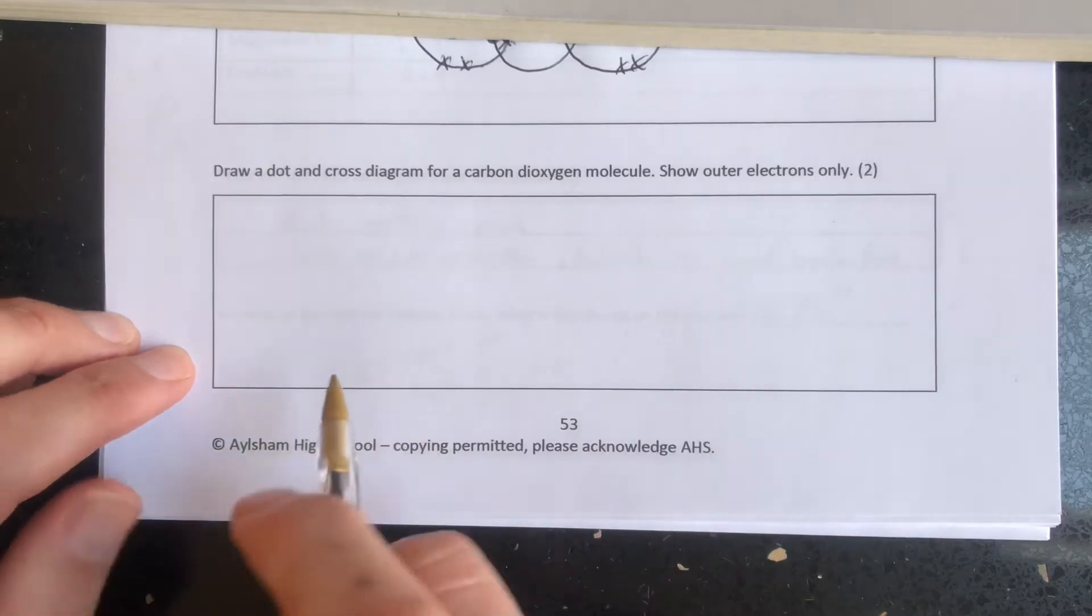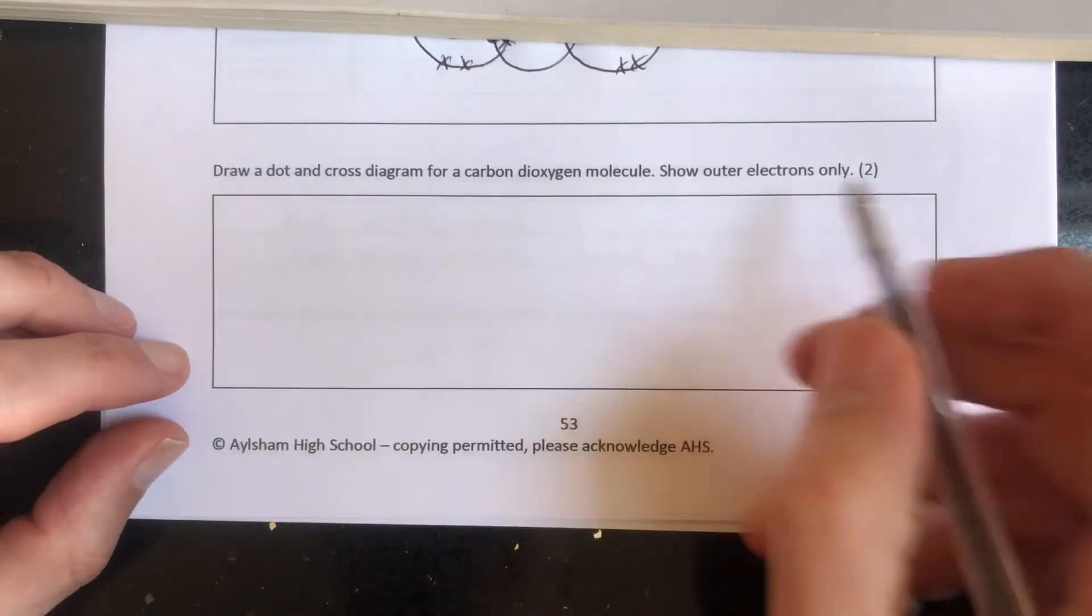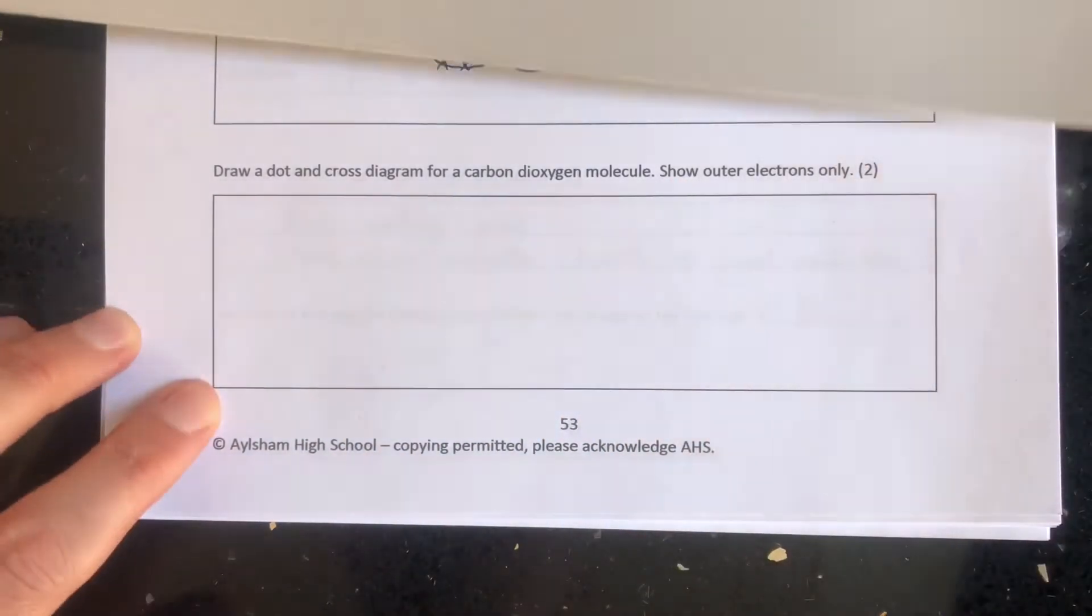Draw a dot and cross diagram for a carbon dioxide molecule, this time showing outer electrons only. Very popular question this at GCSE.